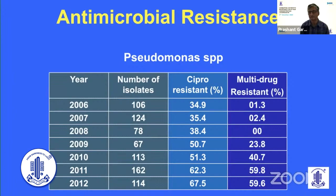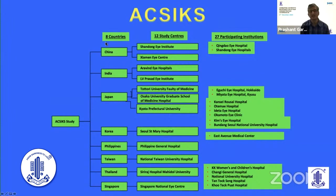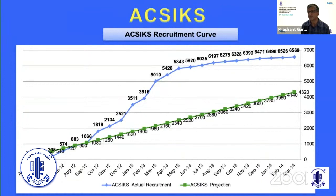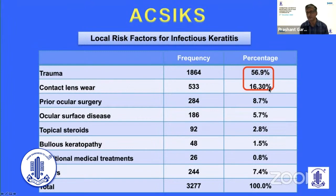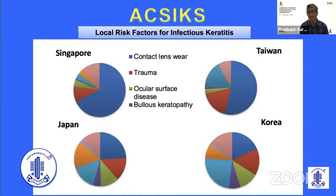More recently, a large multicentric trial sponsored by the Asia Cornea Society published results of the Asia Cornea Society Infectious Keratitis Study (ASICS). This study ran across eight different countries with 12 study centers and 27 participating institutions; Phase 2 added more centers. The study aimed to enroll 4,000 patients but ended up enrolling more than 6,500. It showed that in the Asia-Pacific region, trauma and contact lens wear are the two most important predisposing factors, but their distribution differed by country — trauma was predominant in India, China, Philippines, and Thailand, while contact lens wear was most important in Singapore, Japan, Taiwan, and Korea.